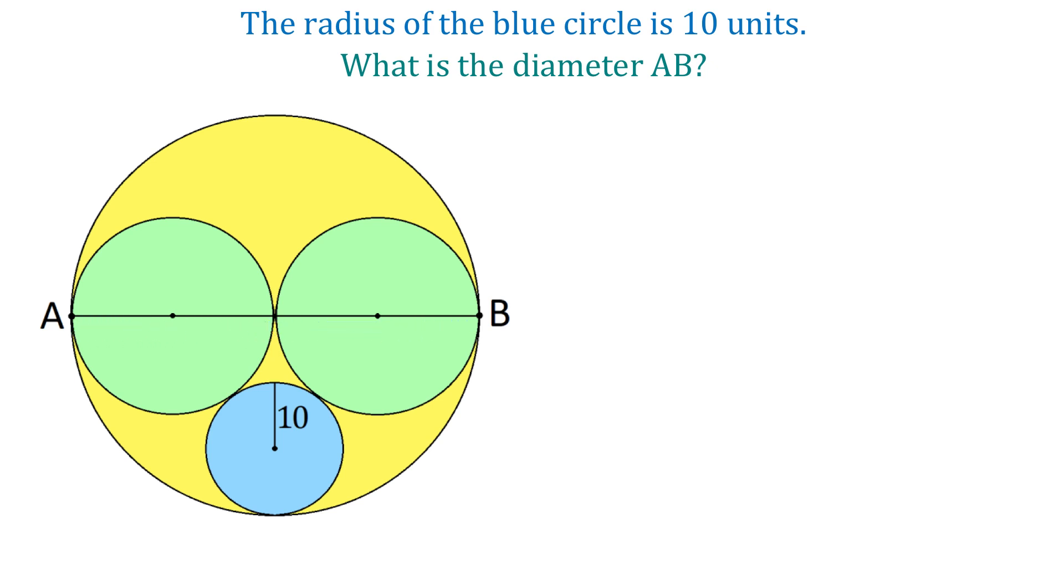To solve this problem, notice that if we could find the radius of one of these green circles and multiply it by 4, then we will get the diameter of the yellow circle. So let's start by connecting the center of the blue circle with the center of one of the green circles. We will also connect the center of the blue circle with the center of the yellow circle. And now we have a right triangle.